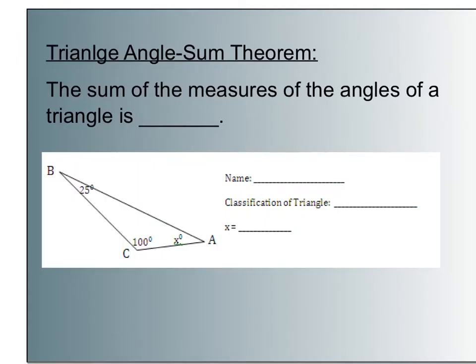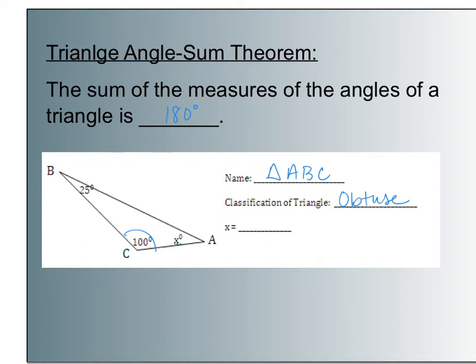Something really cool about triangles is the sum of the measures of the angles of a triangle is always 180 degrees. Every single triangle, the three corners add up to 180 degrees. Looking at this triangle ABC, I see one angle greater than 90, so this is an obtuse triangle. To solve for X, since I know the sum of the angles is 180, I do 180 minus 100 minus 25, which leaves 55 degrees, so X equals 55.